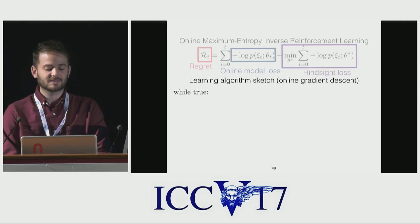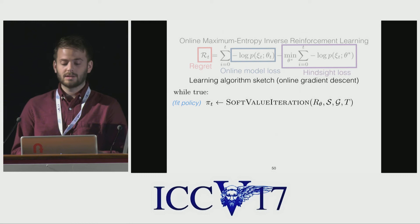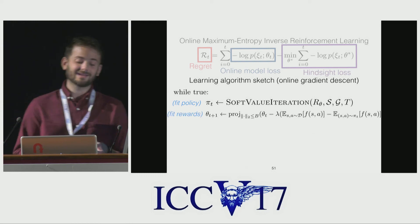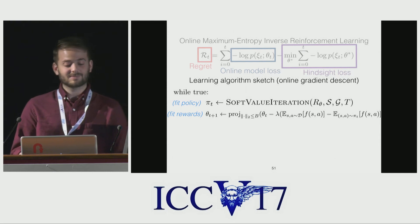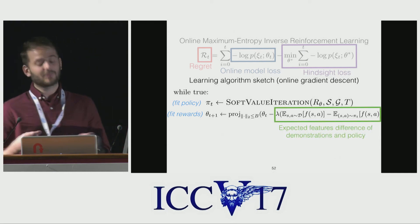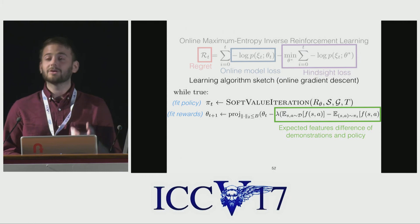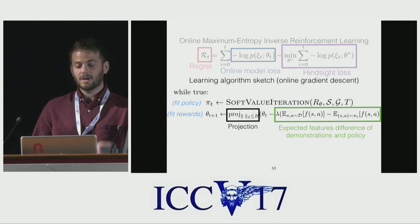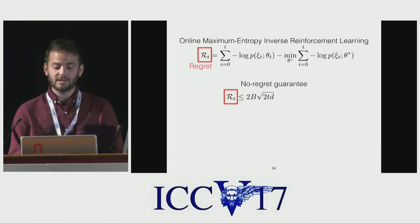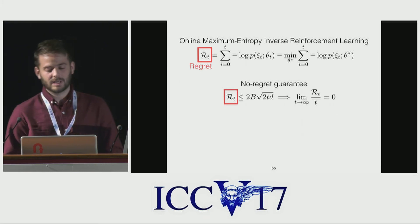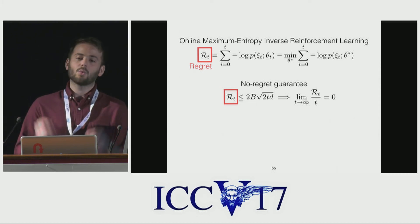I'll sketch the main learning steps to fit our model. First, value iteration is performed over the state space to compute the policy, which is a global one-step model of how the person will behave. Second, a projected gradient descent step is taken on the parameters of the policy. The gradient is computed in terms of the expected feature difference of the expert demonstrations and the current policy. The features include information about the person's location, the objects they have, and what object they're interacting with. We prove that our algorithm is no-regret, which means as demonstrations accumulate, the time-average regret approaches zero, and its online performance approaches that of a model trained with all of the data.